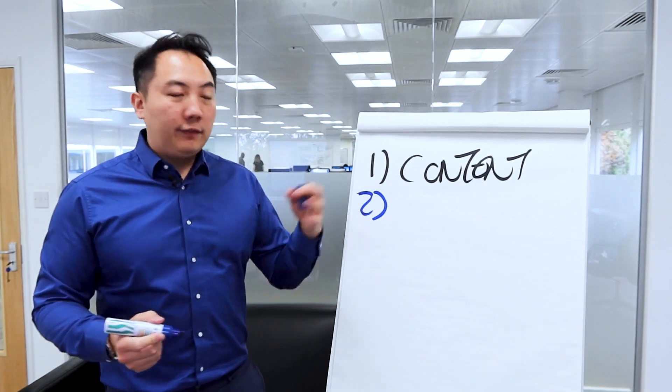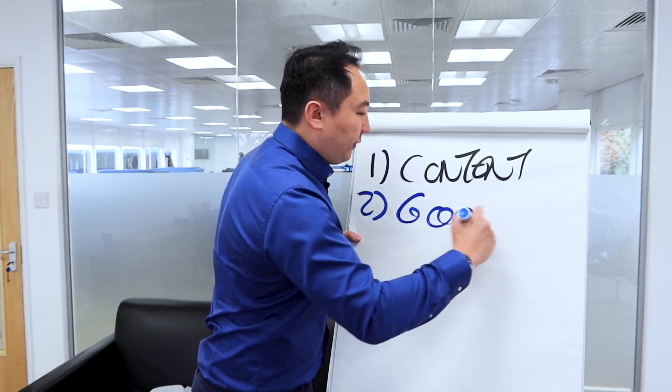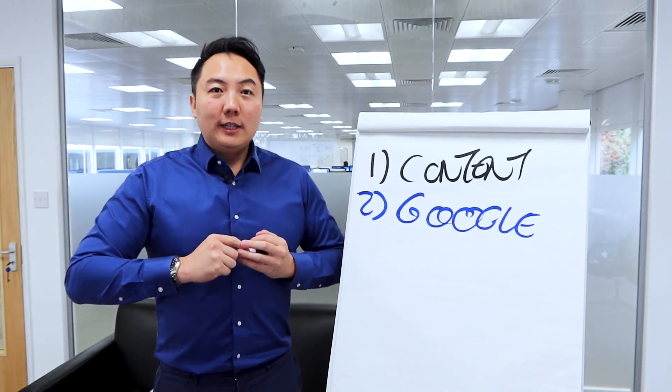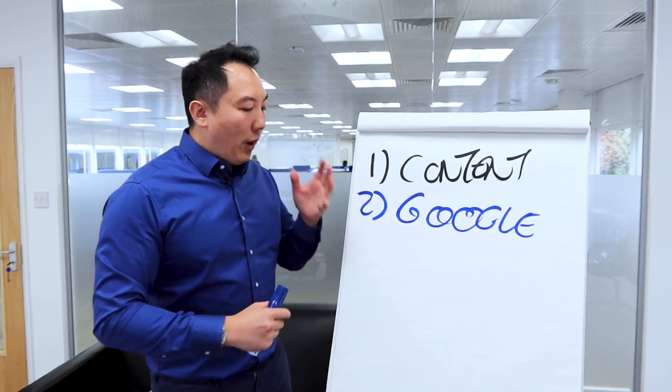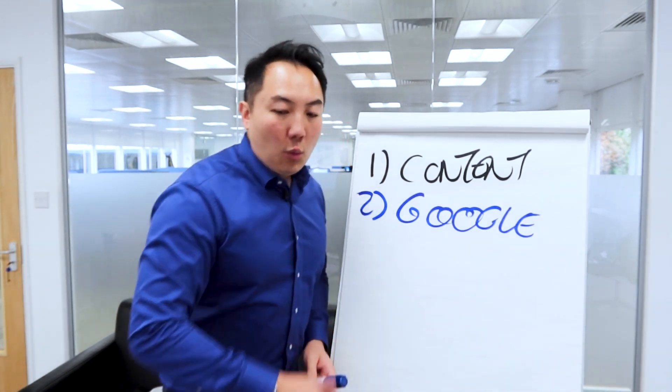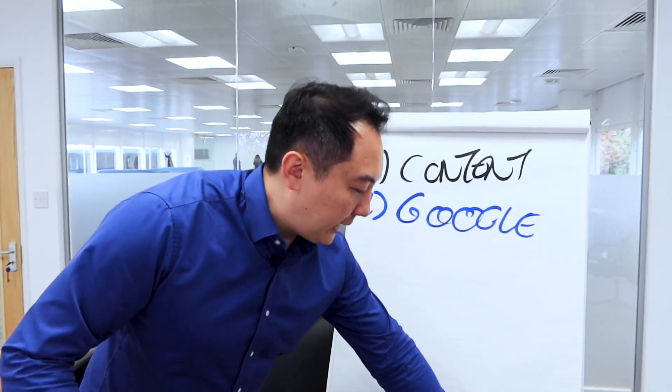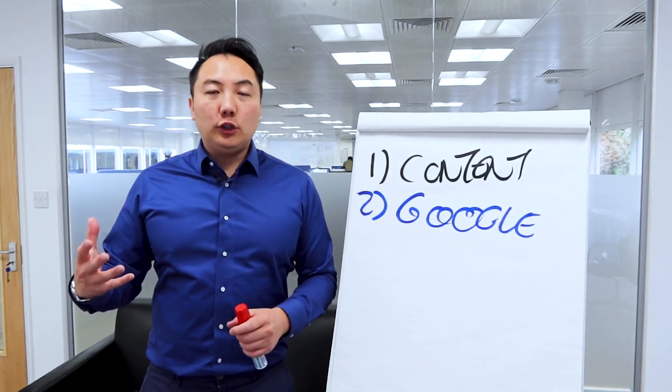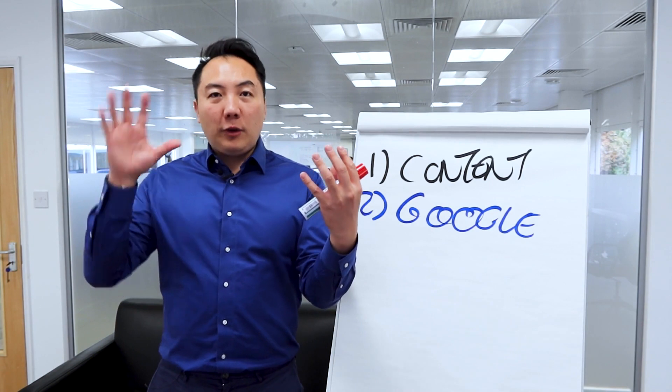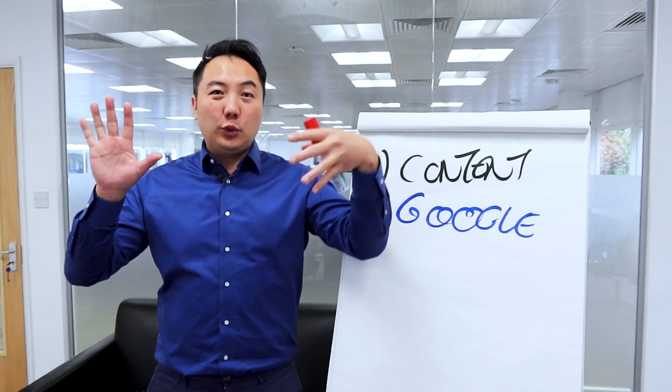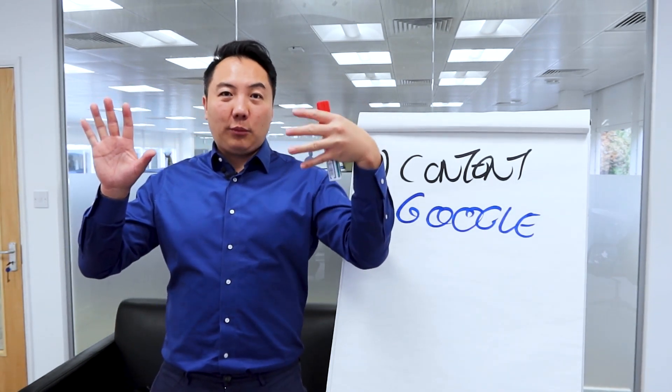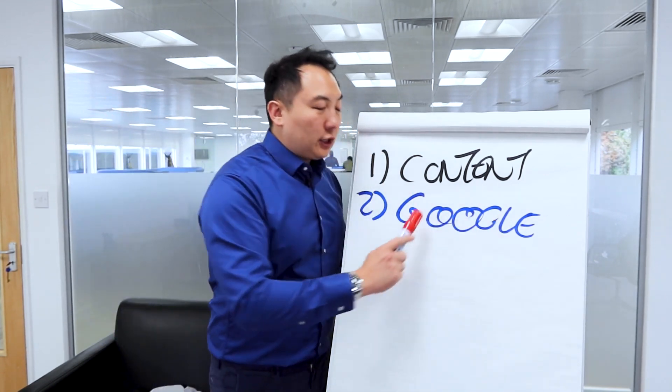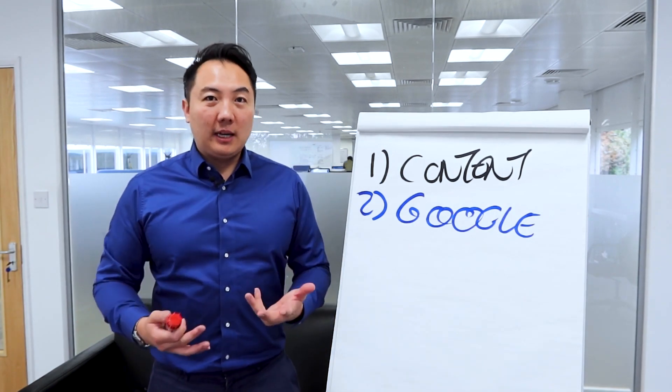The second reason why you have to use YouTube for marketing is because of its parent company, Google. Google owns YouTube. When you put a video on YouTube and someone types into Google, which is the biggest search engine in the world, it will pull the videos in and you'll start getting exposure on YouTube and Google at the same time.